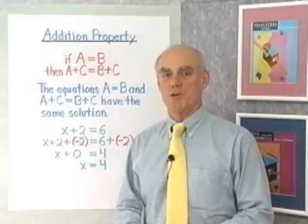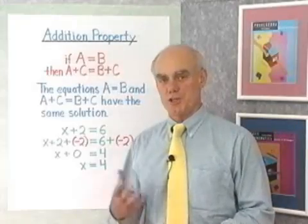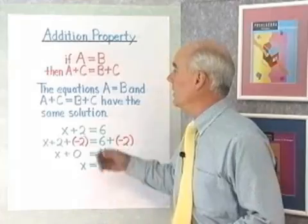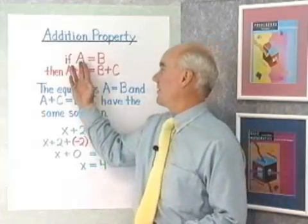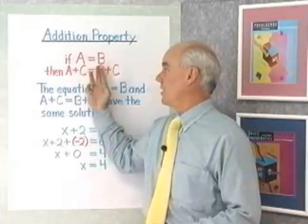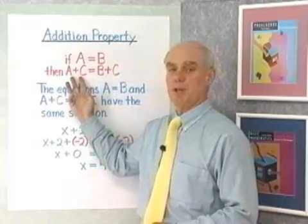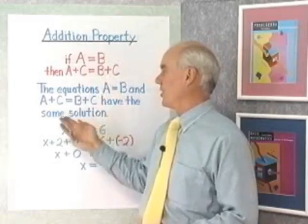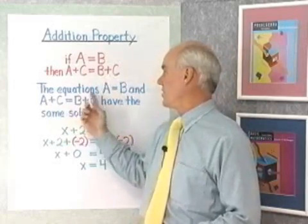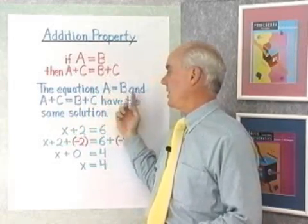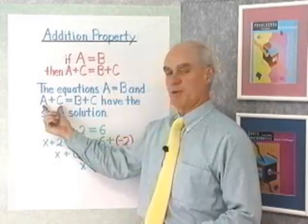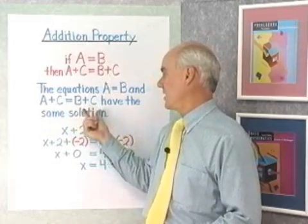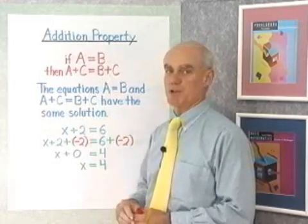To start our work with solving equations, we need what is called the addition property of equality. It says that if A and B are equal, then A plus C and B plus C are also. In other words, the equation A equal B and the equation A plus C equal B plus C have the same solution.